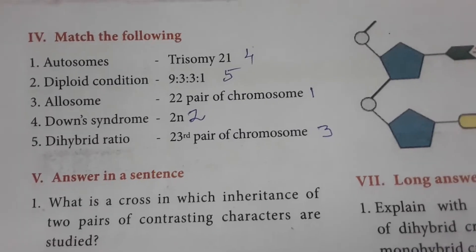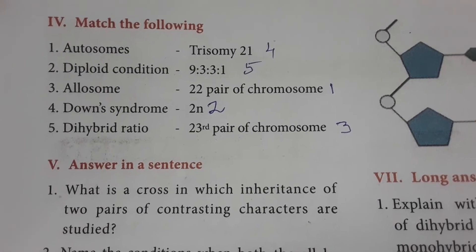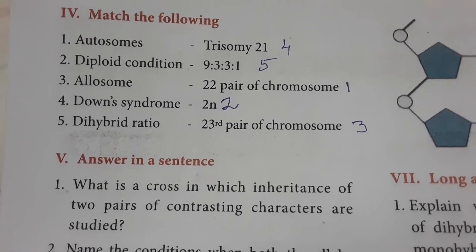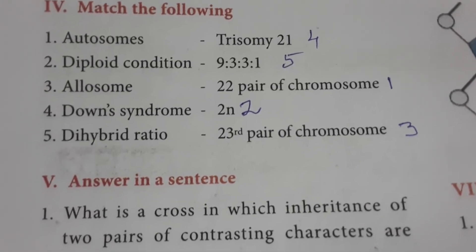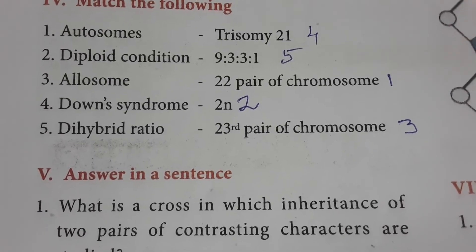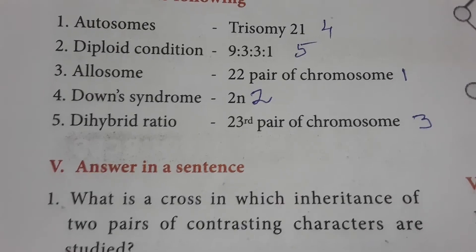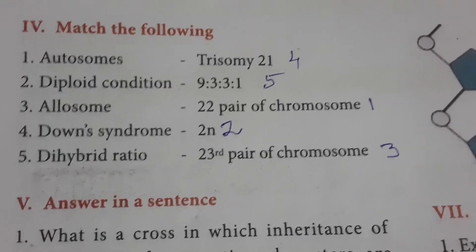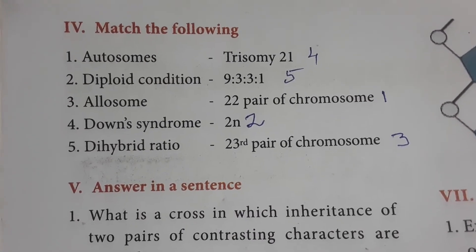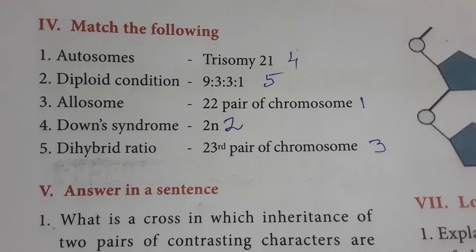Match the following: Autosomes are the 22 pairs of chromosomes, that is body chromosomes. Diploid condition is 2n, and haploid is n. Allosome is the 23rd pair of chromosomes, that is the sex chromosome. Down syndrome is due to trisomy of the 21st chromosome.